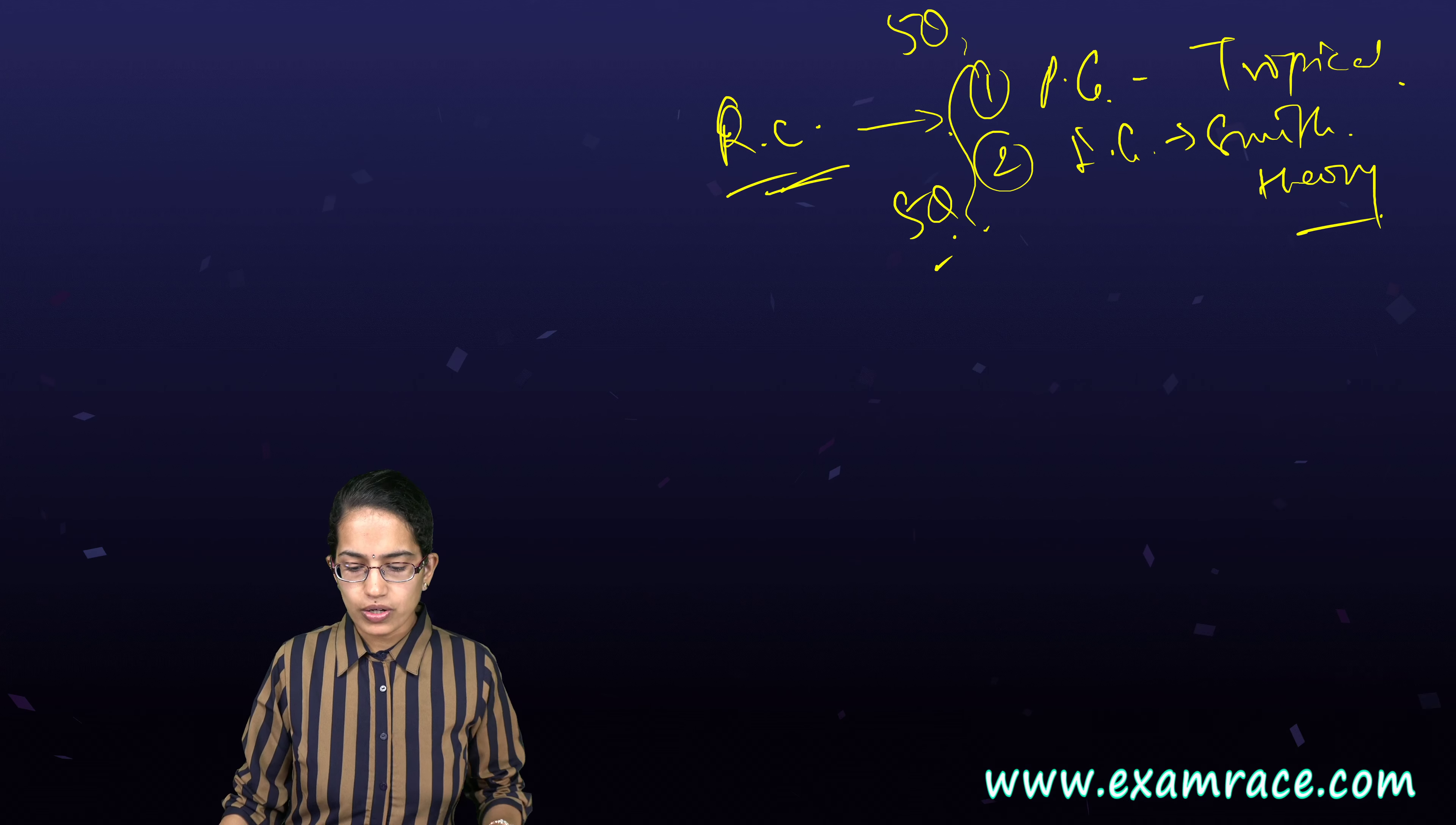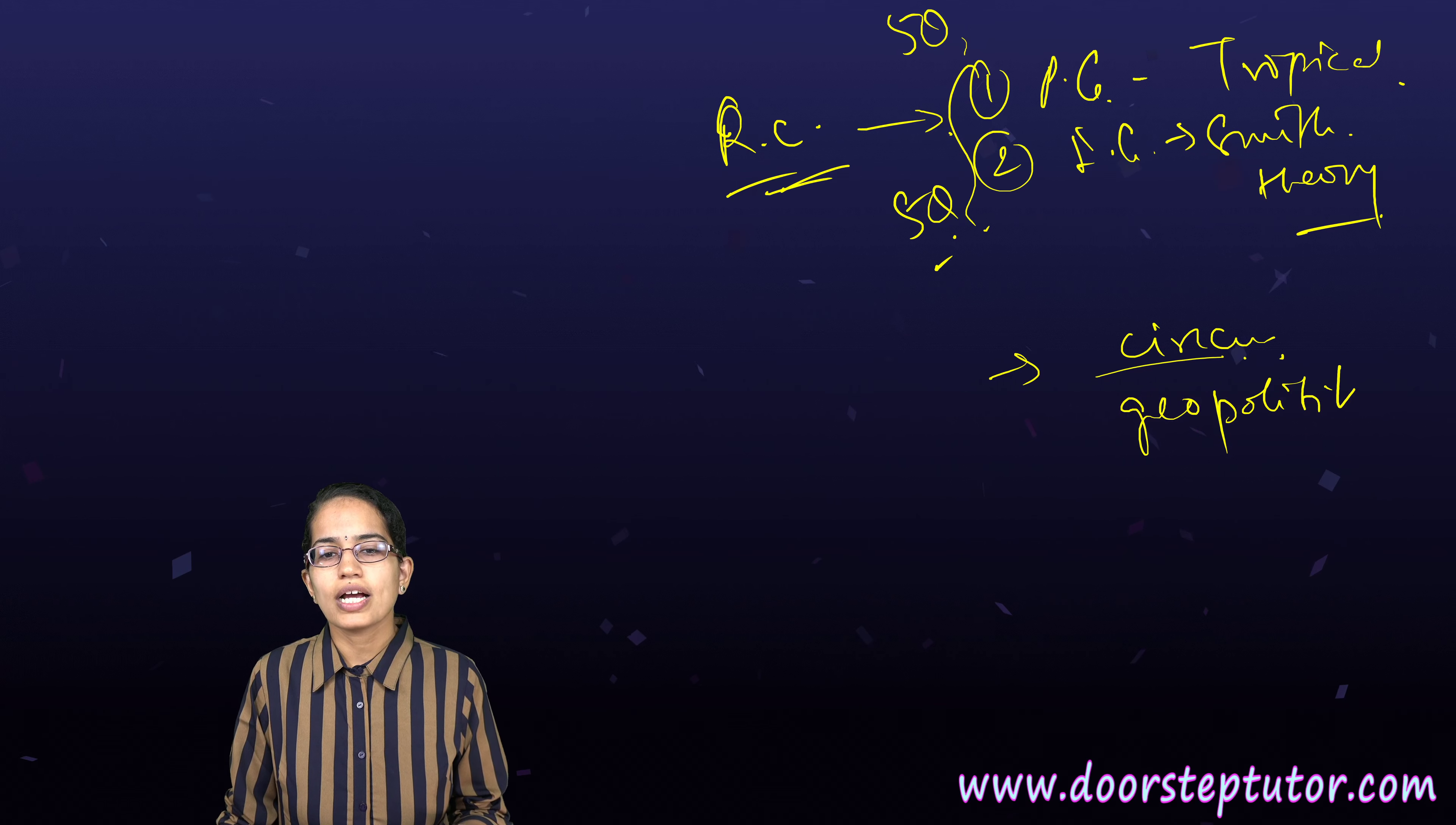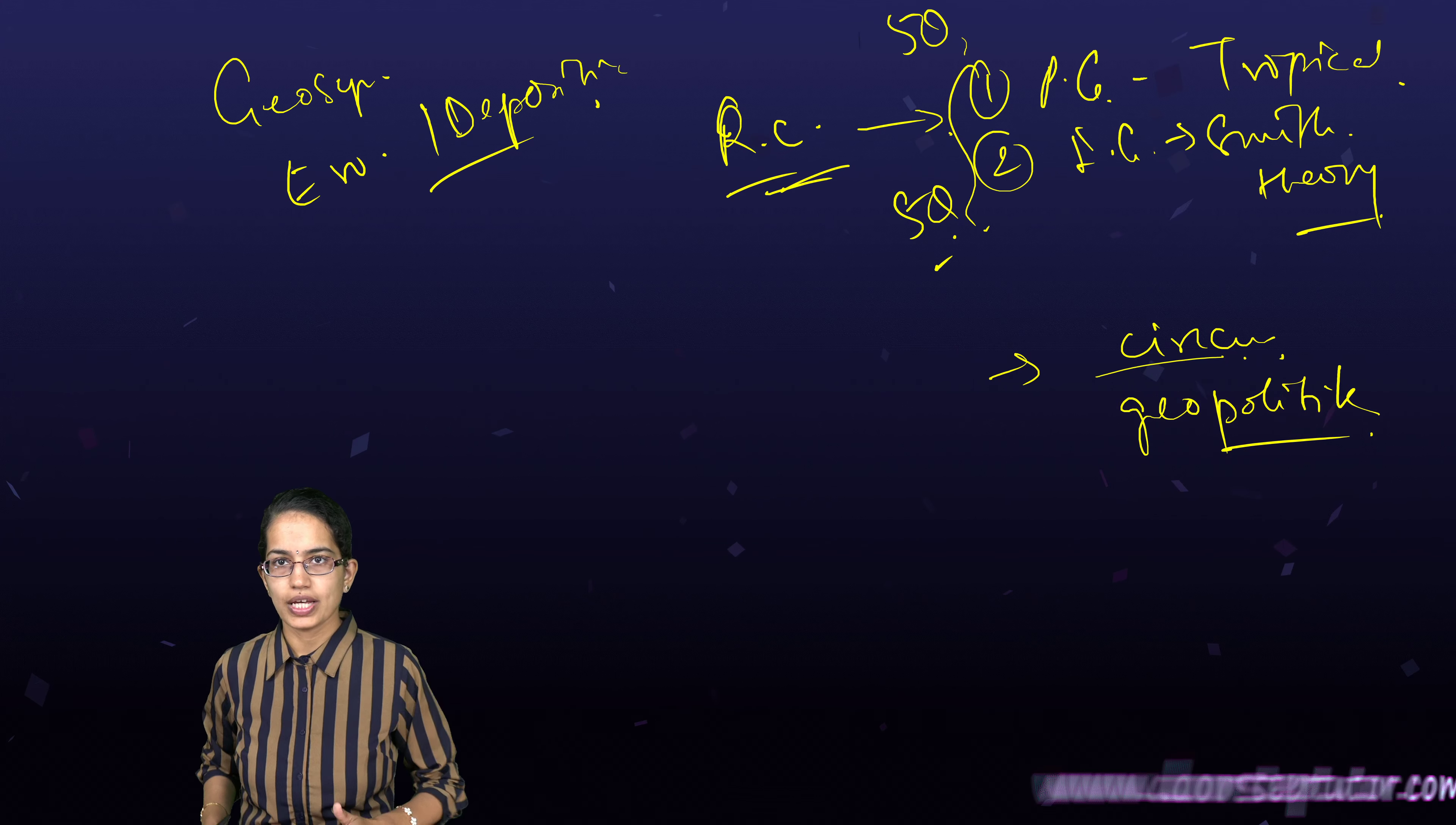Now coming on to the basic questions, the rote memory questions I would say. The questions were based on who gave the circumference of the earth, the question was based on who gave the term geopolitics. So those were very basic and direct questions that were there. But besides these, what kind of questions you need to keep in mind? Questions pertaining to geosyncline, erosional and depositional landforms.